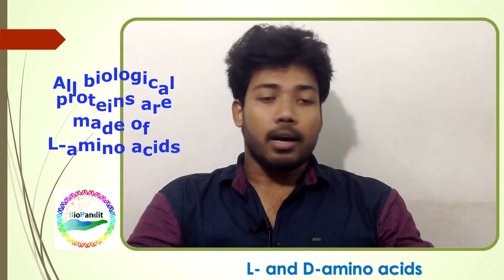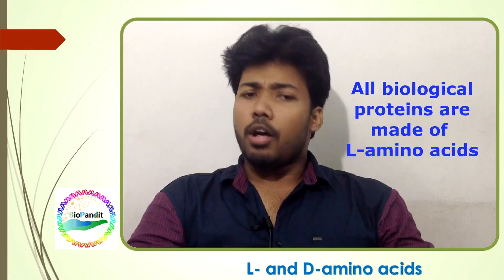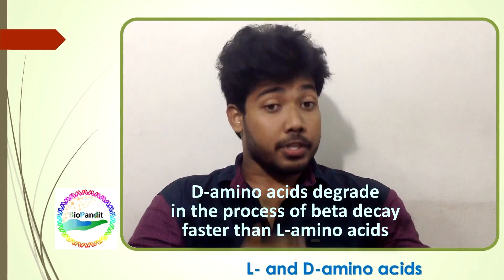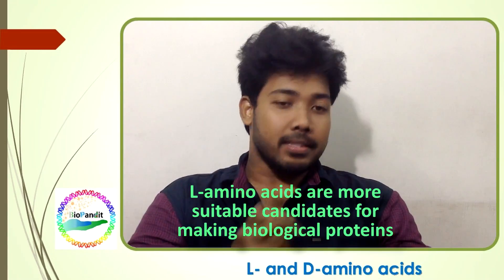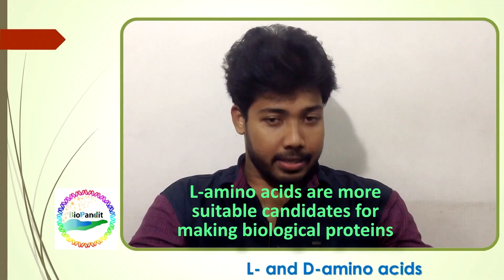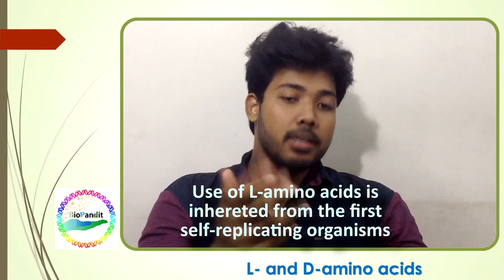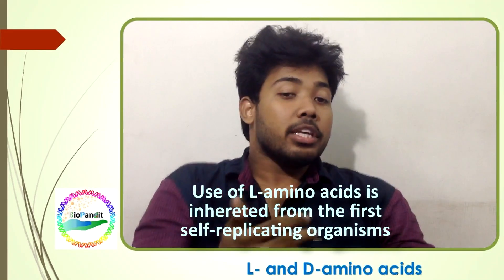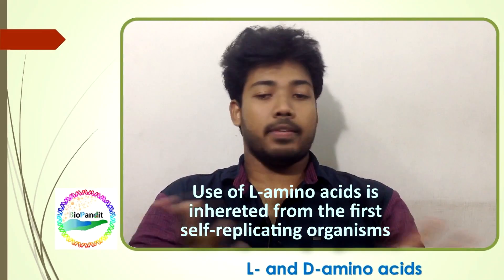All biological proteins are made of L-amino acids. Why is there this chiral selection? There is no straightforward answer to this question, but the most probable answer is that D-amino acids degrade faster than L-amino acids in the process of beta decay, as the weak nuclear force is chiral in nature. This makes L-amino acids a more suitable candidate for making biological proteins. Another hypothesis is that the first self-replicating organism used L-amino acids, which has led to the inherited use of L-amino acids in all living systems today.